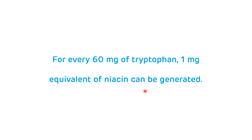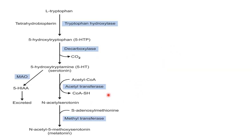Before going into the serotonin pathway, we should know that for every 60 milligrams of tryptophan there is synthesis of one milligram of niacin. In the serotonin pathway, tryptophan in the presence of tetrahydrobiopterin as a cofactor gets converted to 5-hydroxy tryptophan with the help of tryptophan hydroxylase enzyme. This 5-hydroxy tryptophan then undergoes decarboxylation with the help of decarboxylase enzyme and is converted to 5-hydroxy tryptamine, known as serotonin, which acts as a neurotransmitter.